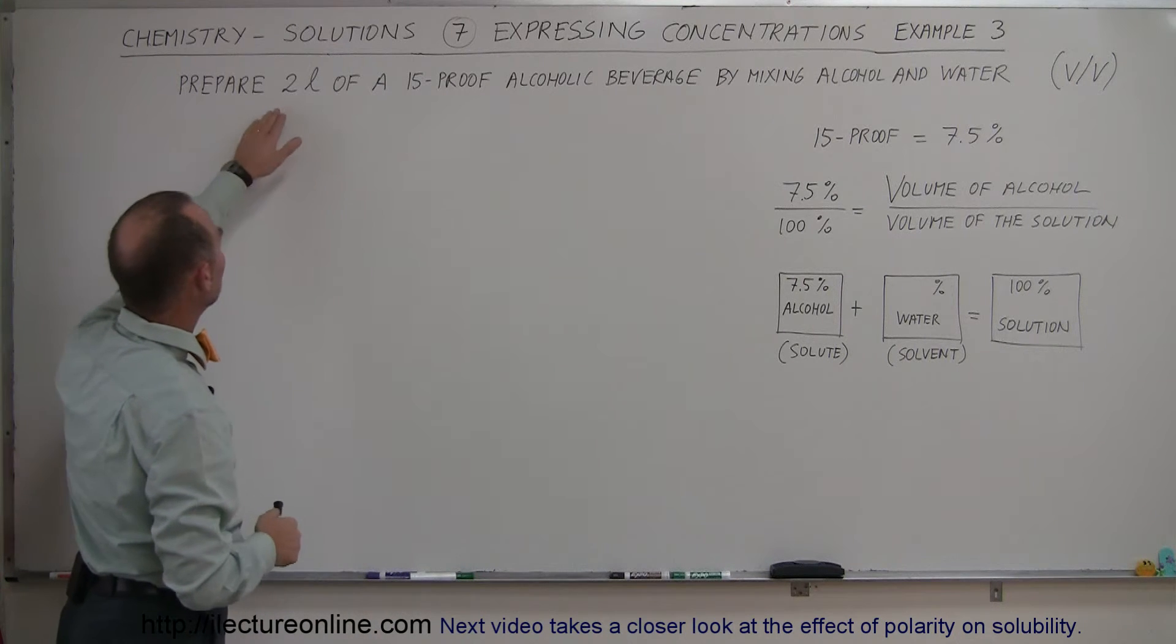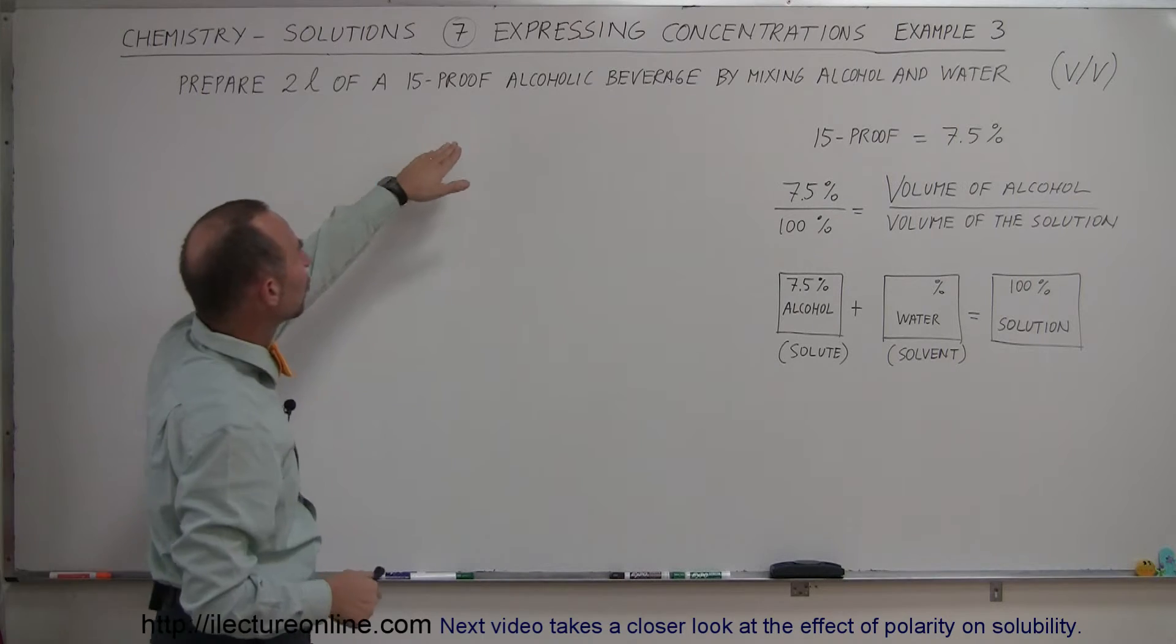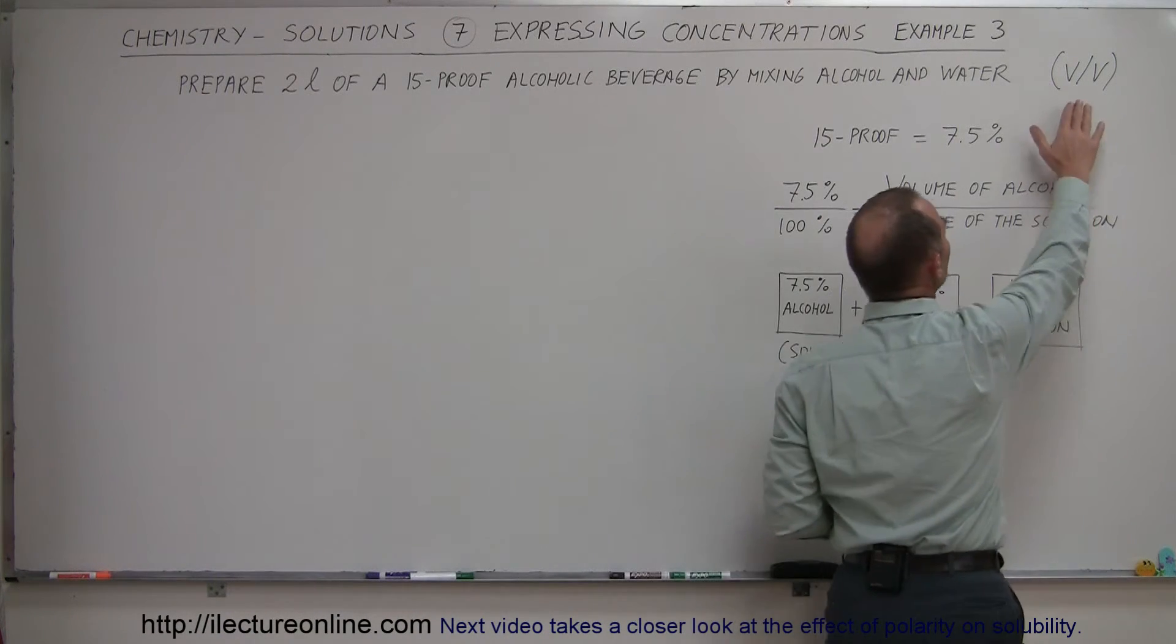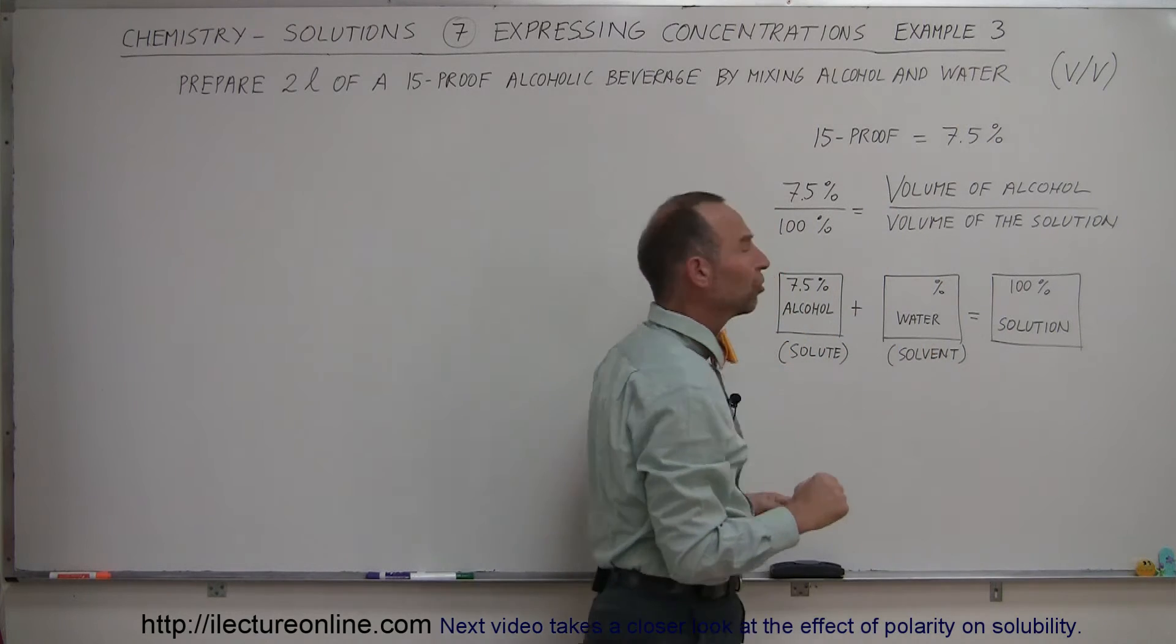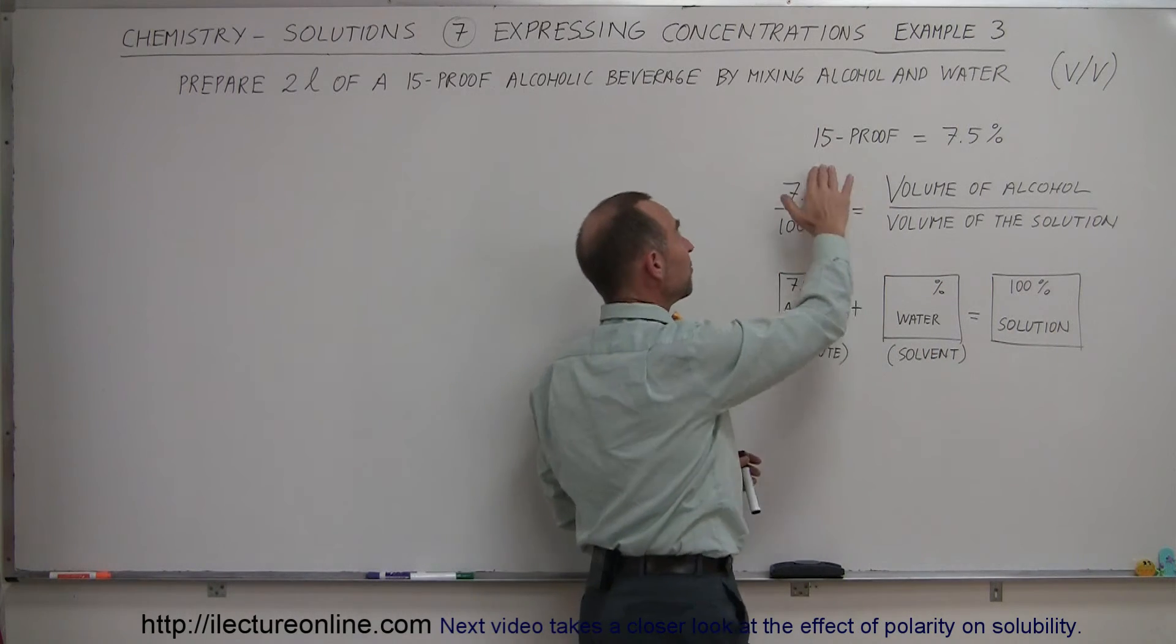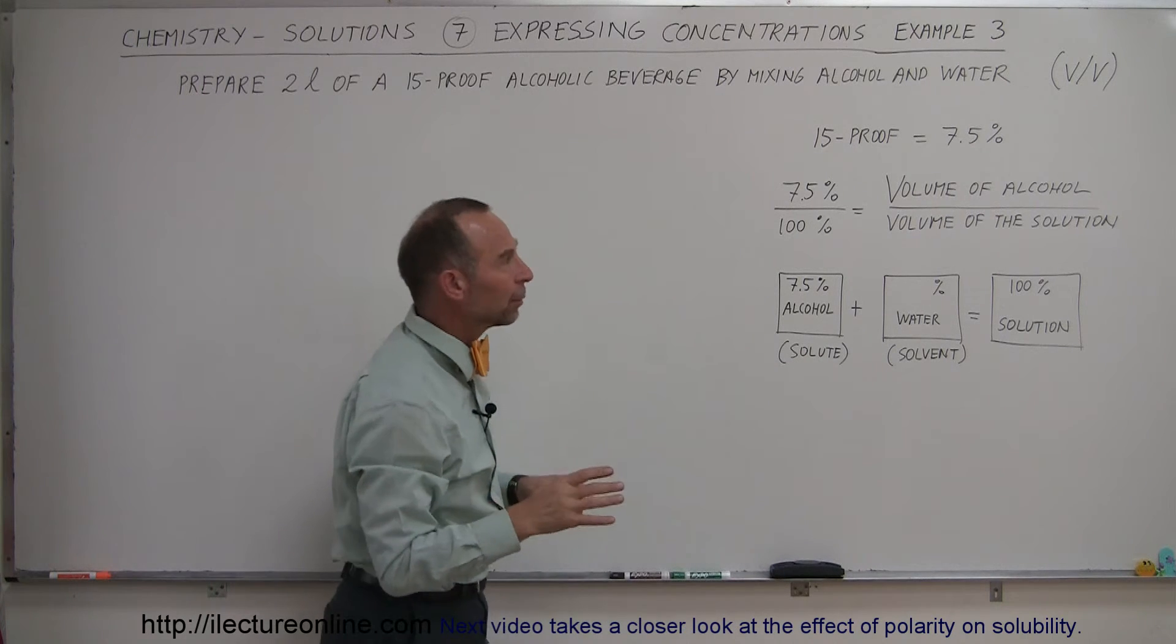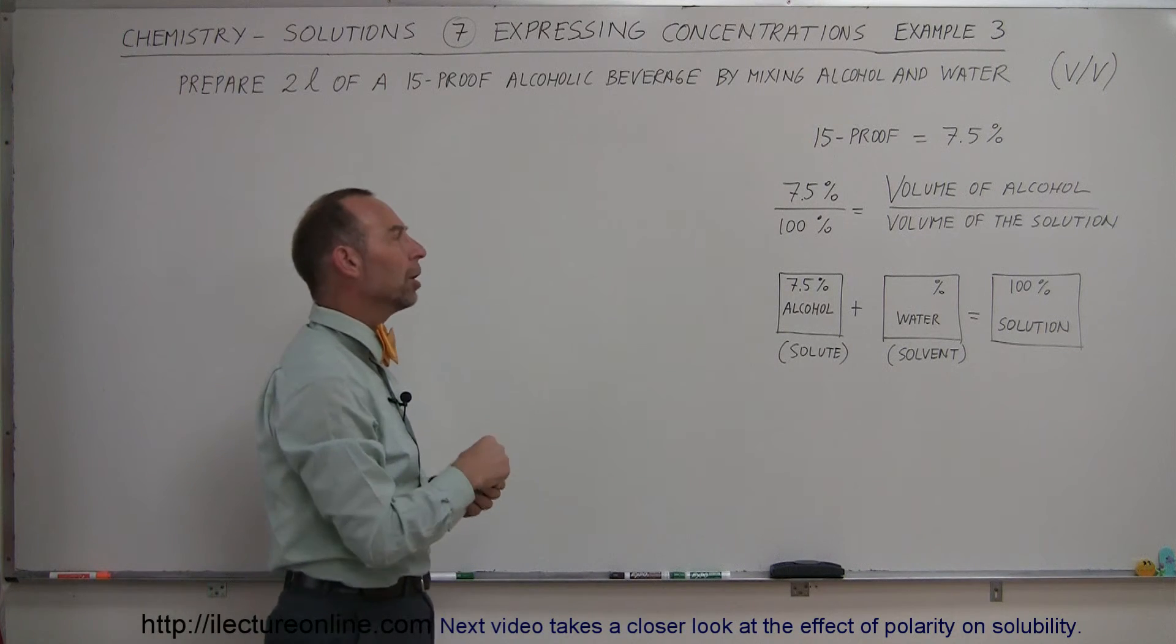We're trying to prepare 2 liters of a 15-proof alcoholic beverage by mixing alcohol and water. Again, we're doing the volume-in-volume comparison. We need to know that 15-proof means that 7.5% of the liquid, or of the solution, will be alcohol.